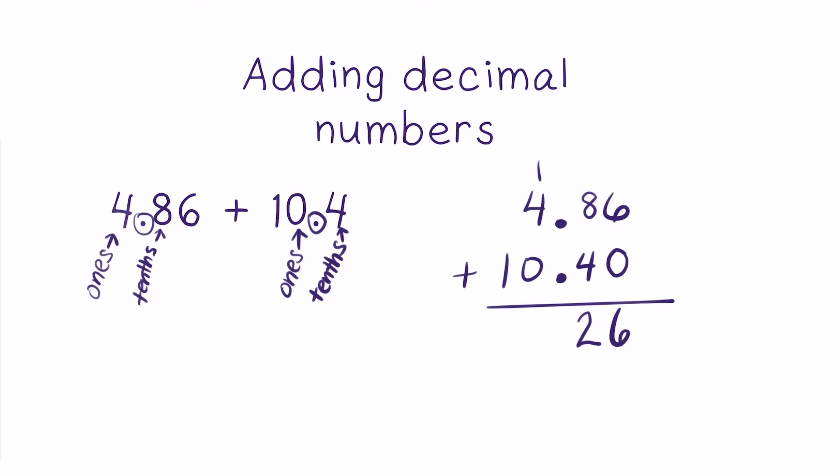Now to the ones place, one plus four equals five ones. And the tens place, just bring one ten down to the sum. Now don't forget to bring the decimal point down to the same place in the sum as it is in the addends.